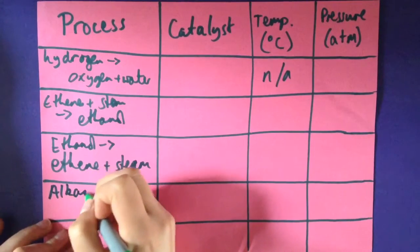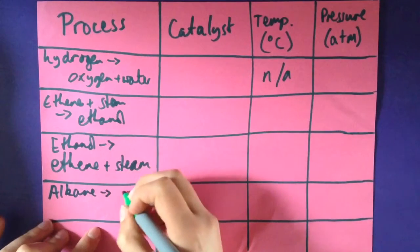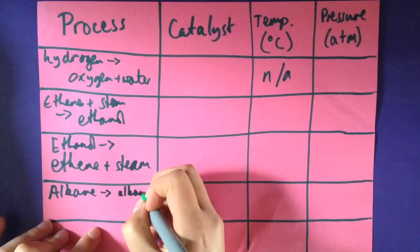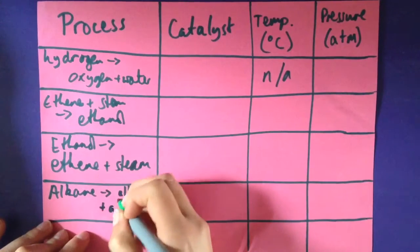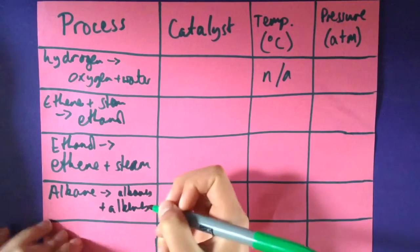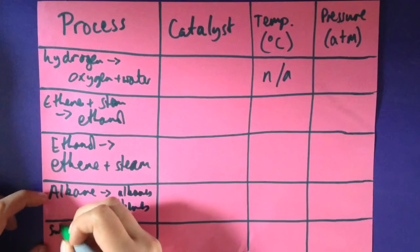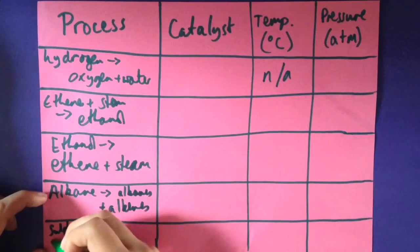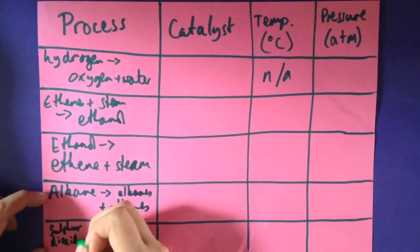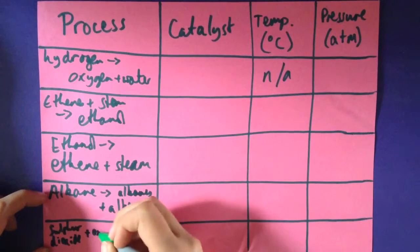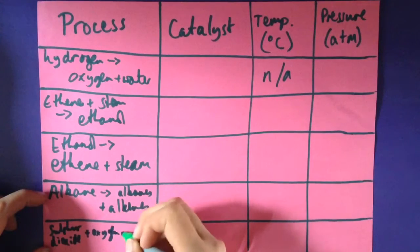Ethanol being broken down into ethene and steam. Long chain alkanes being broken down into short chain alkanes and alkenes.